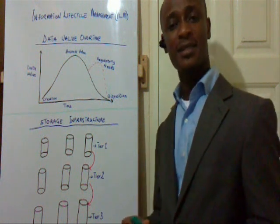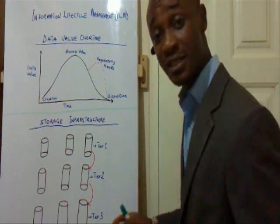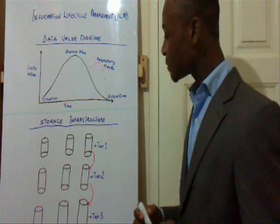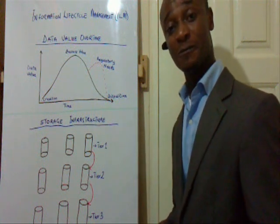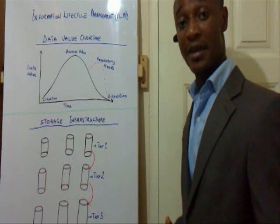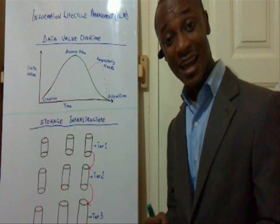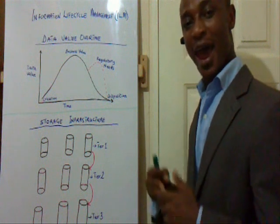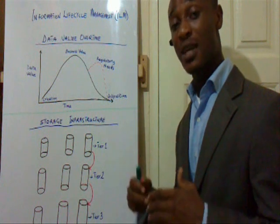Oracle ILM Assist enables customers to establish the ILM requirements for data placement across the storage tiers. Oracle Database Partitioning also helps customers to store data across storage tiers based on business-defined rules. And Oracle Advanced Compression enables storage tiers to be optimized with its compression technology. Together, Oracle ILM Assist, Oracle Database Partitioning, and Oracle Advanced Compression help organizations to cost-effectively manage the storage infrastructure with a scalable platform.